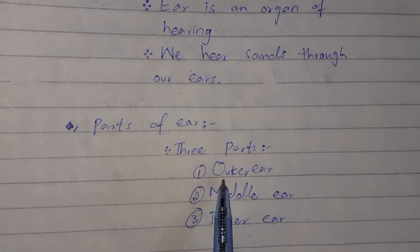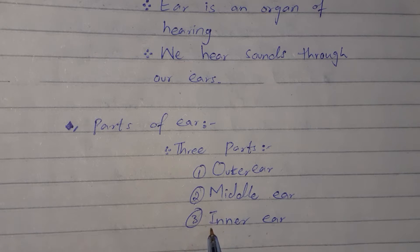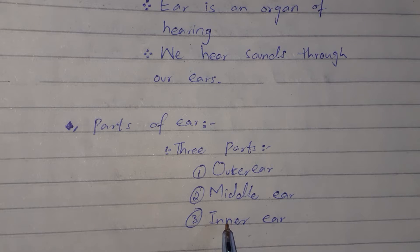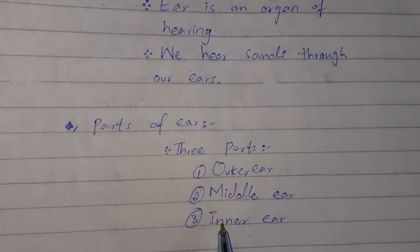The ear has three parts. The first part is the outer ear, then the middle ear, and the inner ear. Now we will study these parts and their functions.